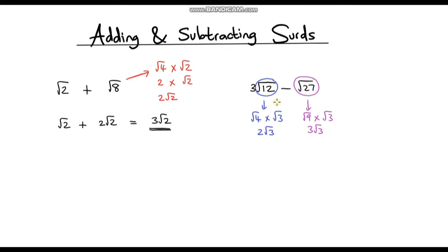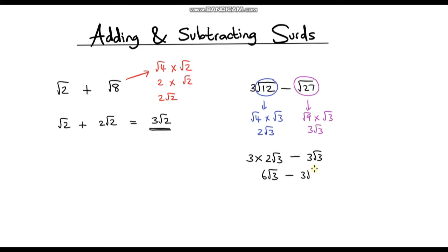Now let me rewrite the expression. I need to be careful because I've got a 3 in front of root 12 — that 3 is being multiplied by root 12. So this becomes 3 times 2 root 3, then we subtract 3 root 3. We can simplify: 3 times 2 root 3 is 6 root 3. So we've got 6 root 3 minus 3 root 3, which leaves us with 3 root 3. That is our final answer.